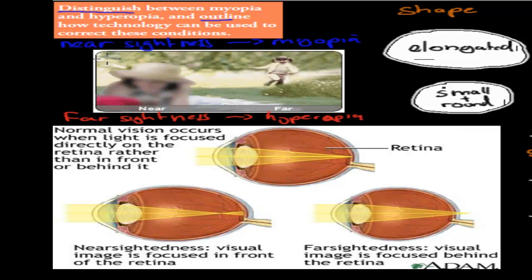Both these conditions are often genetic, but we can use either lenses or corrective surgery to change this back to the way it should be. So first, the distinguishing — the difference between the two.